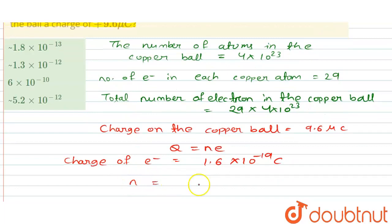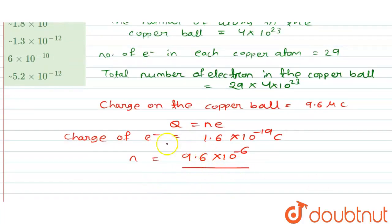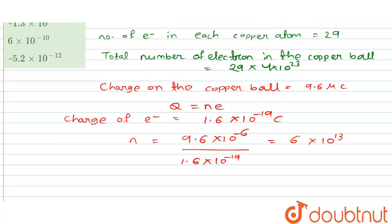The number of electrons removed can be calculated by dividing total charge by charge of electron: 9.6 × 10⁻⁶ divided by 1.6 × 10⁻¹⁹, which gives 6 × 10¹³. So 6 × 10¹³ electrons are to be removed to give the copper ball a charge of 9.6 microcoulombs.